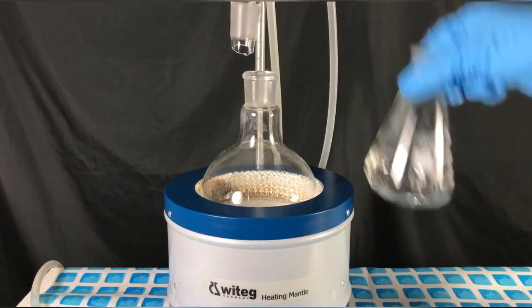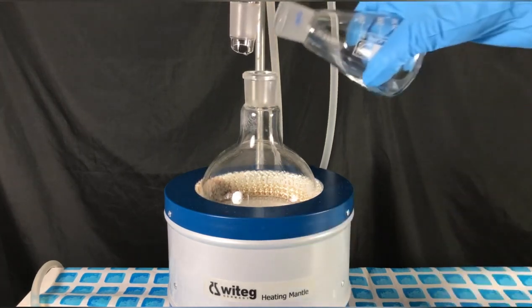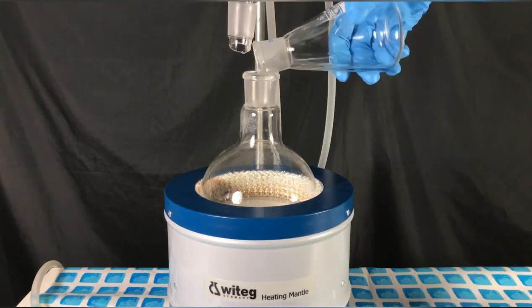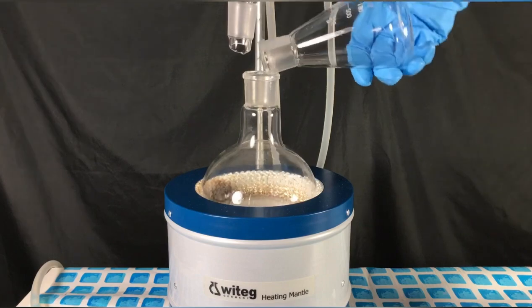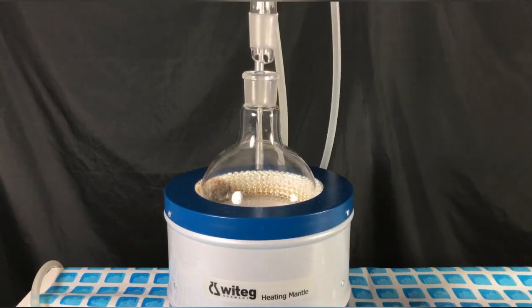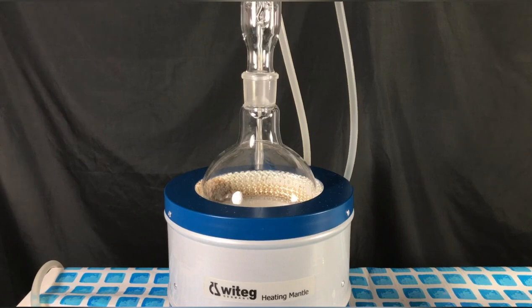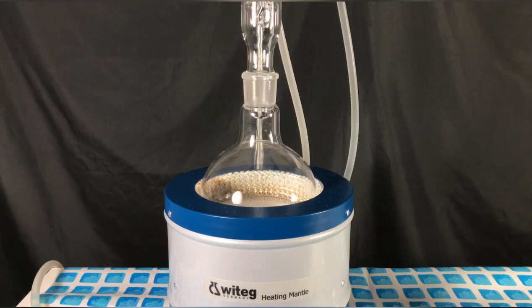The flask was swelled with a small amount of ethanol, which was later also added to the reaction. This allowed us to transfer the urea that had crystallized on the walls into the reaction flask. The reflux condenser was then lowered down.